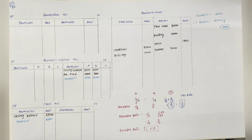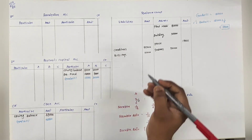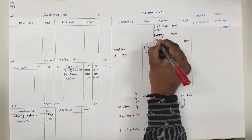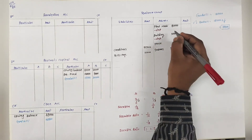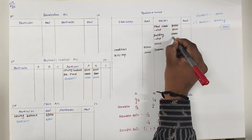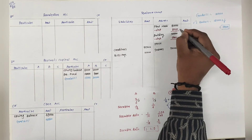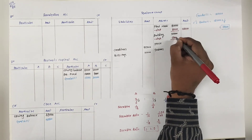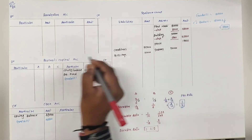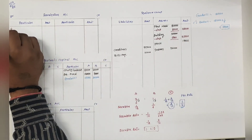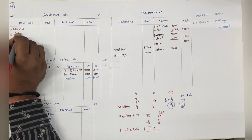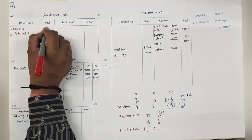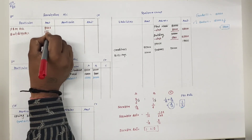Fixed assets is to be depreciated at 10% - यानि कि plant and machinery and building पर depreciation count करना है. 80,000 का 10% = 8,000; 50,000 का 10% = 5,000. माइनस करेंगे: 80 में से 8 गया तो 72, 50 में से 5 गया तो 45. Revaluation के debit side: plant and machinery account 8,000 and building account 5,000.